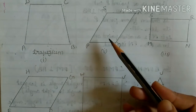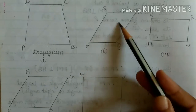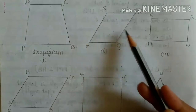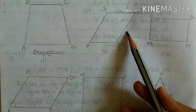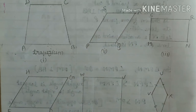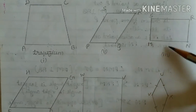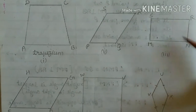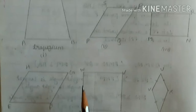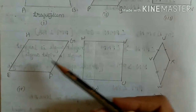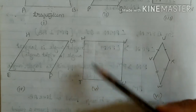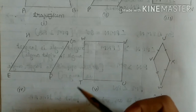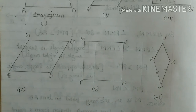Now here you see both pairs of opposite sides are parallel in this figure — this pair and this pair are parallel to each other. Here also, in this figure, opposite sides are parallel. Both pairs are parallel. In this figure also, both pairs are parallel. So these quadrilaterals are called parallelograms.